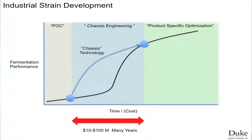The history of these types of processes has really relied on the optimization of microbes in a fermentation process. This shows the performance you need to hit to reach a commercial level. It takes a lot of time traditionally. You have proof-of-concept level, chassis or host strain engineering, and then product-specific optimization, where traditionally this has taken almost $100 million and a decade to optimize a microbe for this step.